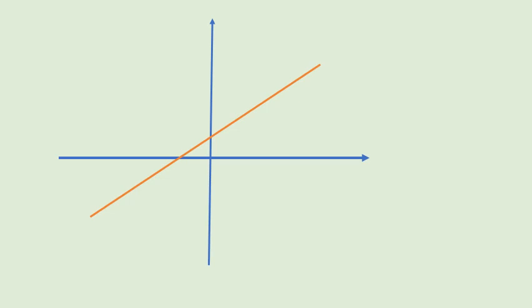Let's draw a simple curve: y equals x plus 1. My question is, what is the limit of x plus 1 as x approaches 0? Direct substitution gives 1. If you go to x equal to 0 on the graph and move up, you get 1. The function is well defined everywhere — notice that orange line, I can draw it without lifting my pen, so the function is continuous. The limit is the finite value 1.